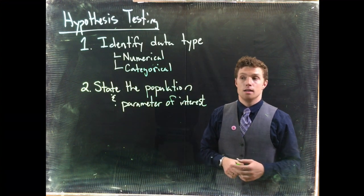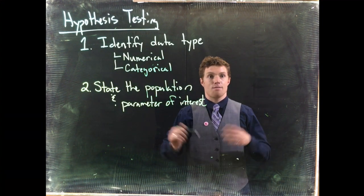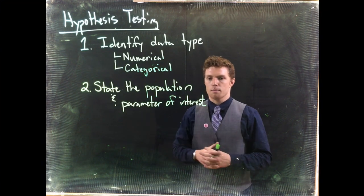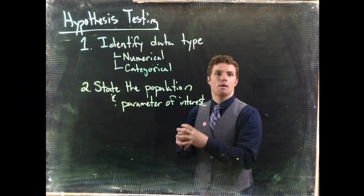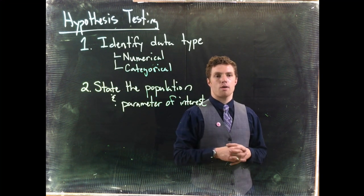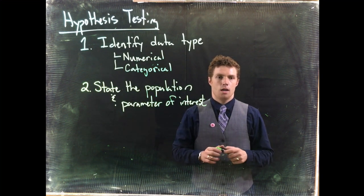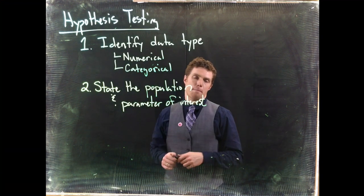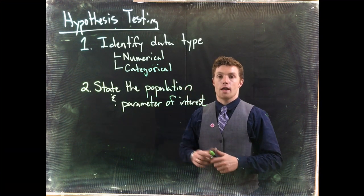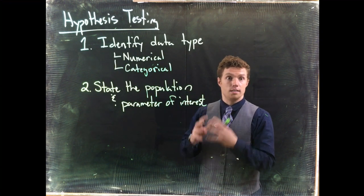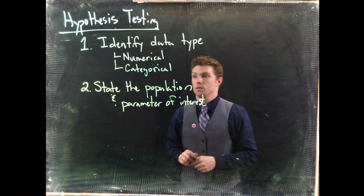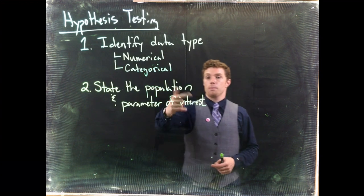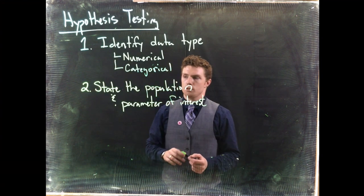We're usually interested in some very specific population — maybe something manufactured by a single company, or perhaps the proportion of people who approve some ballot measure for a specific district. That would be our population of interest. So from our problem, we need to state both the population and the parameter of interest.